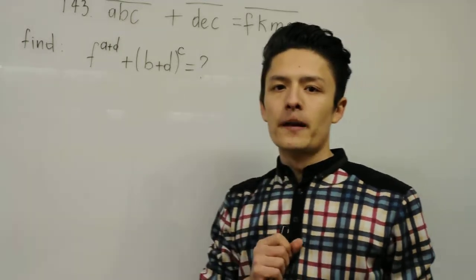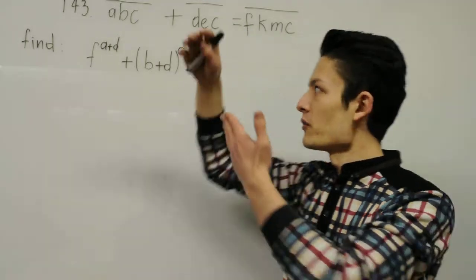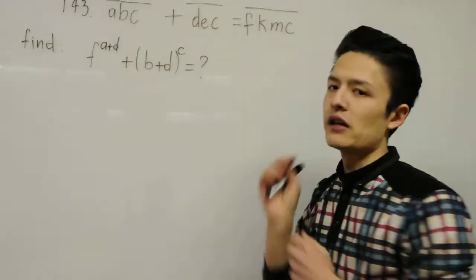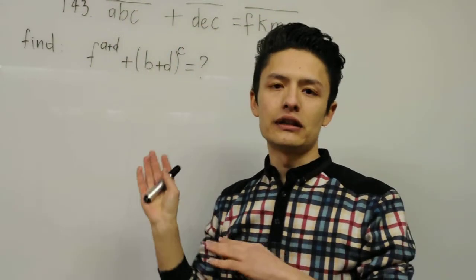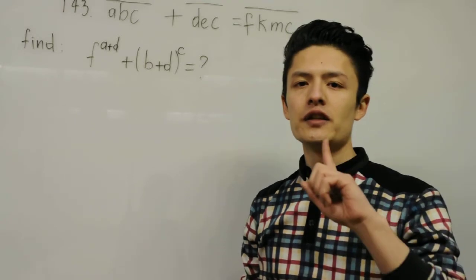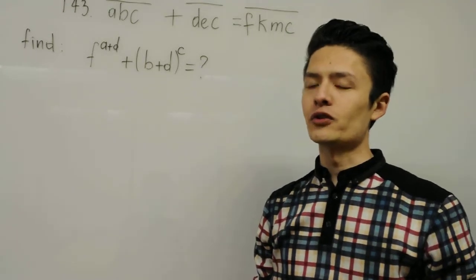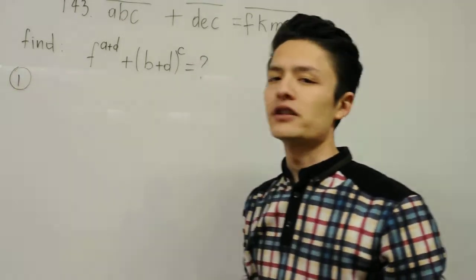Now in this problem, from the first condition, we decide that ABC, D, F, all the letters, they are digits. So we need to use this condition, it's very important. Then we can find the answer. So let's start the first step.